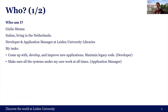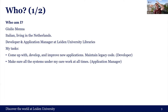So first of all, who am I? My name is Giulio Menna, I'm an Italian living in the Netherlands, and I am a developer and application manager at Leiden University Libraries. I have two tasks: as a developer I develop and improve new applications, but I'm also tasked with maintaining legacy code. As an application manager I make sure that all my systems are always reachable and working at all times — for example, Primo or EZproxy.